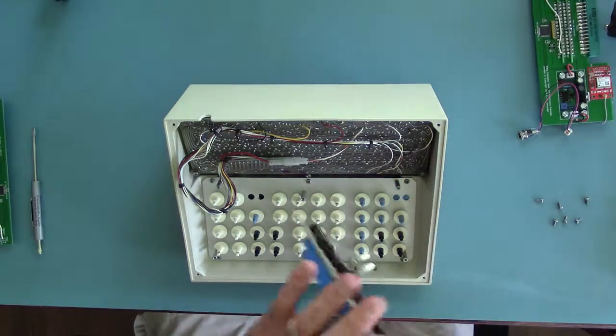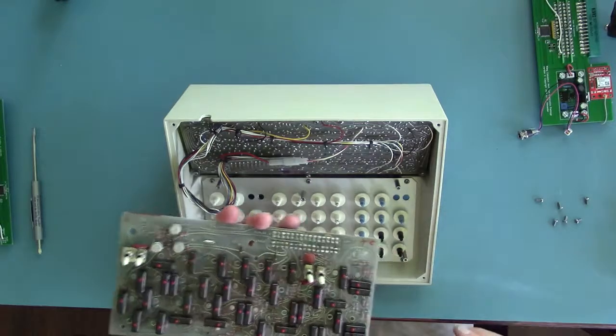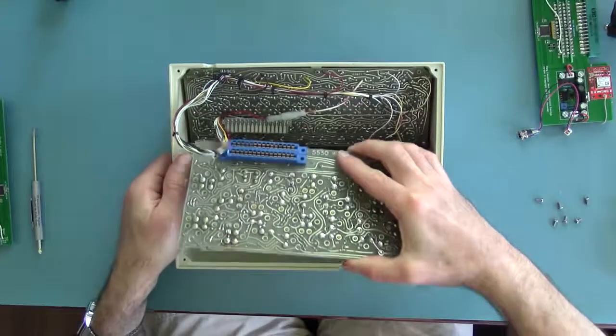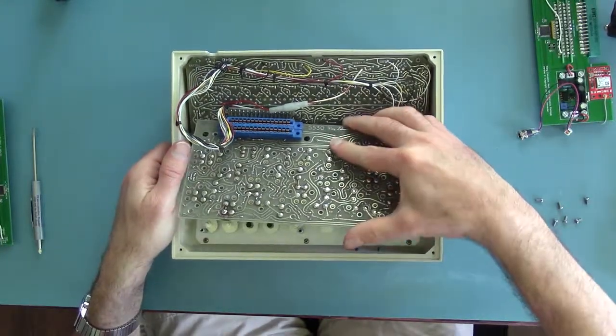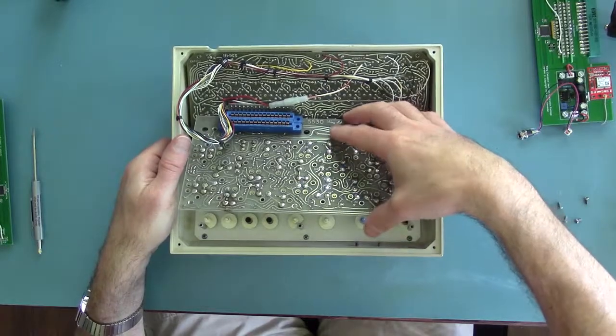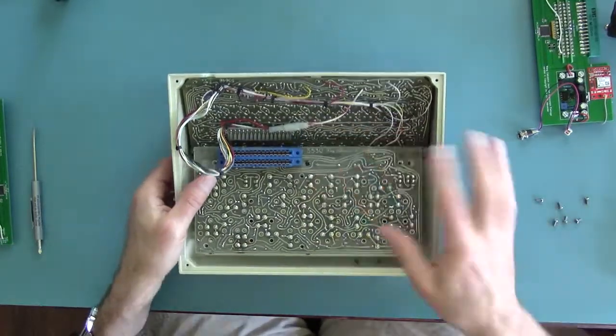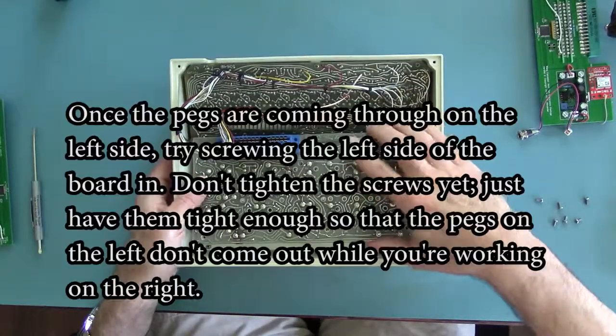Putting the board back on is tricky since so many pegs need to line up with their holes. To make it easier, start by setting all the toggle switches to the down position. When you lay the circuit board onto the pegs, make sure the toggle switches are going through their holes. Tilt the console back so the pegs are straight up. We don't want them leaning.